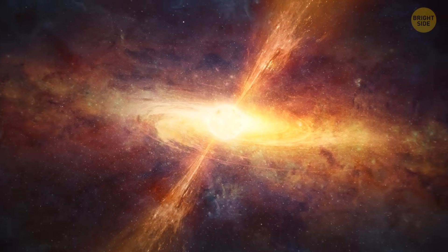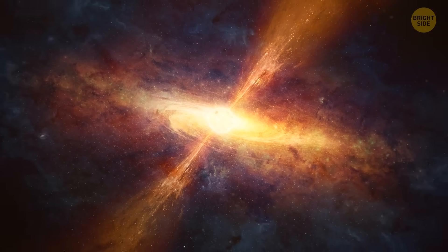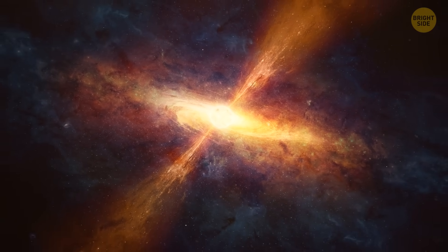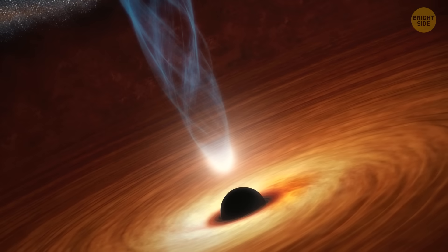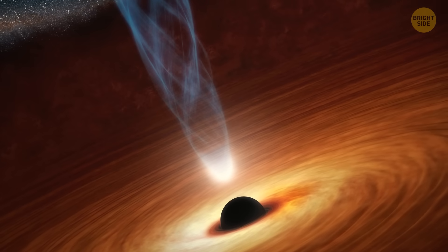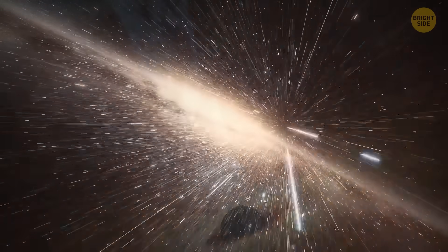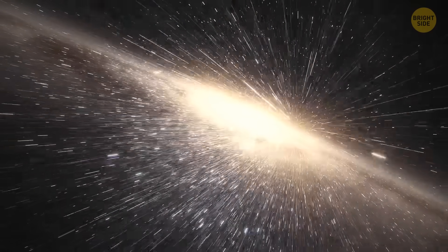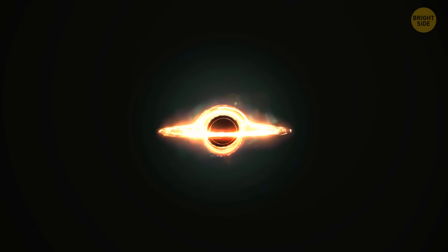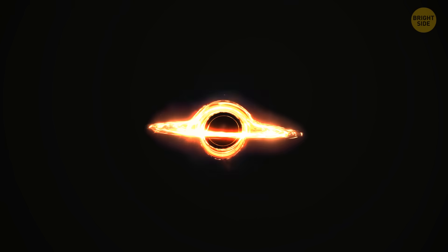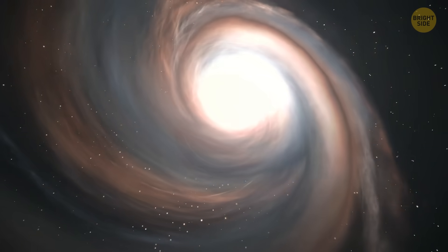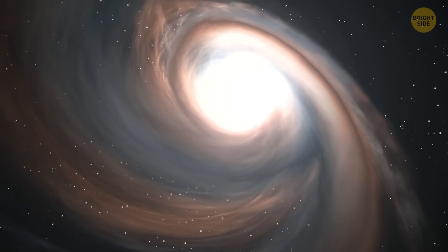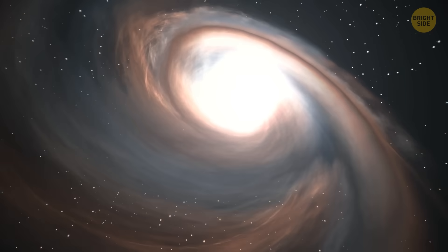And the creepiest part is, this isn't even its true size. This is what it looked like around 10 billion years ago. Since TON-618 is so far away, its light reaches us for a very long time. That means, what we see is how this black hole looked after the universe was born. But what does it look like now? We have no idea. But it's probably millions, billions of times bigger.